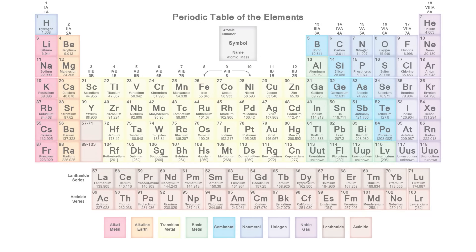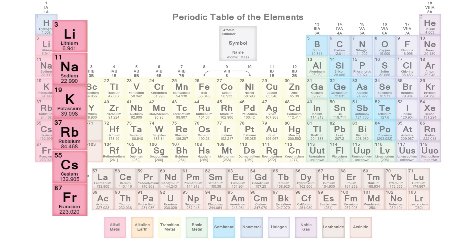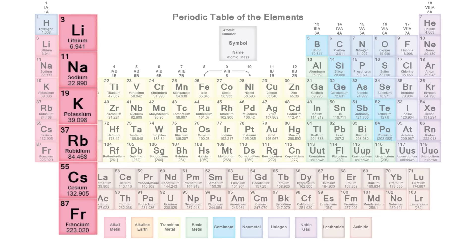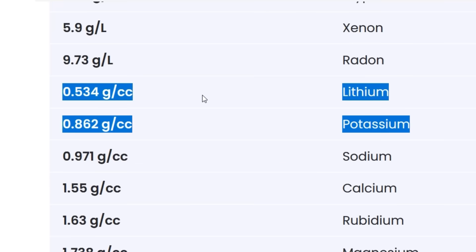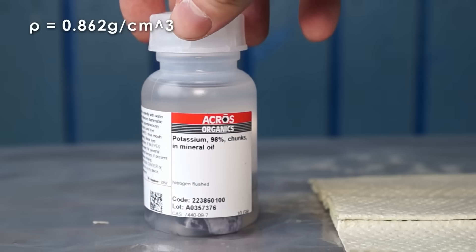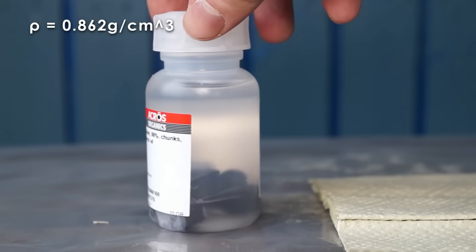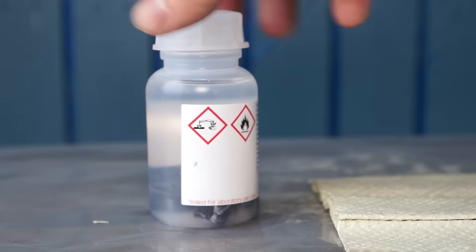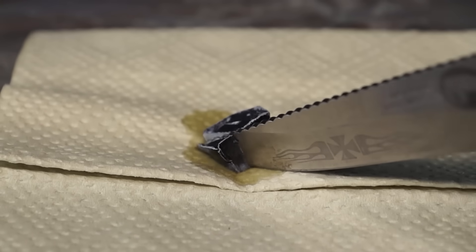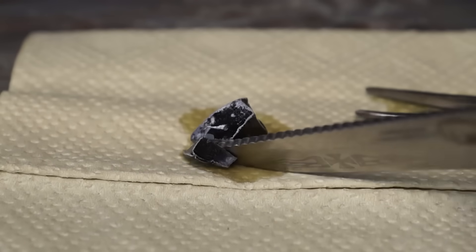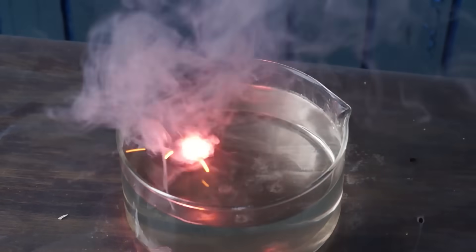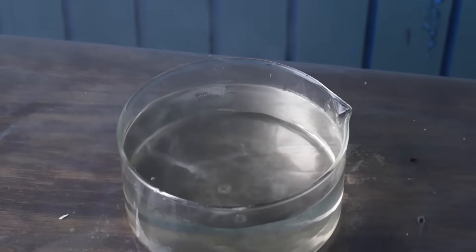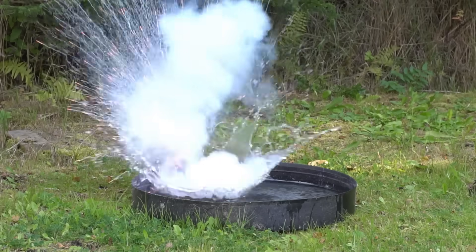However, if we take the next metal in terms of density, strontium, everything immediately falls into place. This metal is already much more active than aluminum, so it can react not just with acid, but even with plain water, displacing hydrogen from it. When trying to melt this metal in the air, it actually catches fire.